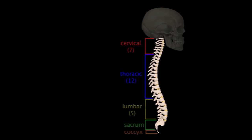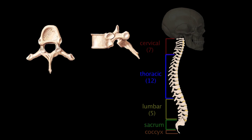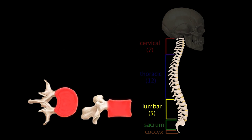Thoracic vertebrae lie in the upper back and provide attachment for the ribs. As a result, their primary characteristic features are costal facets, which are the articulation points between the thoracic vertebrae and the ribs. They also tend to have a more long and slender spinous process, as opposed to the lumbar vertebrae below them, which have shorter, broader spinous processes. Lumbar vertebrae are located in the lower back and, because of the increased weight they support, they also tend to have very large vertebral bodies.